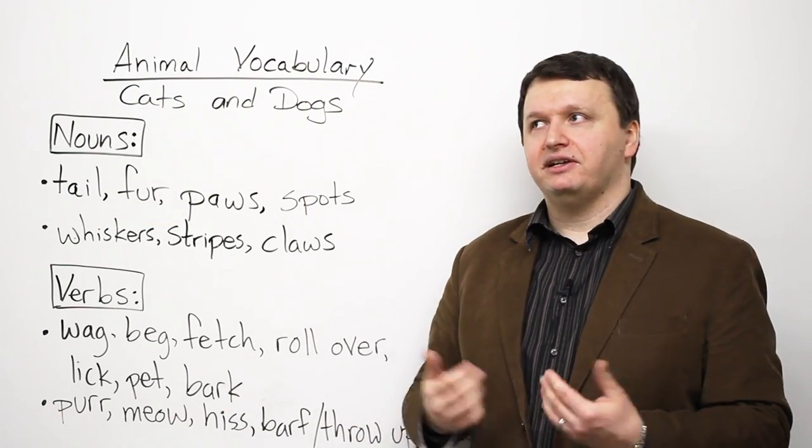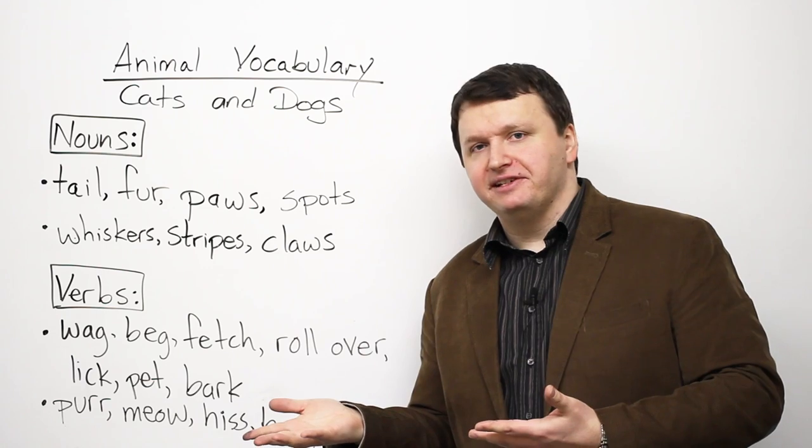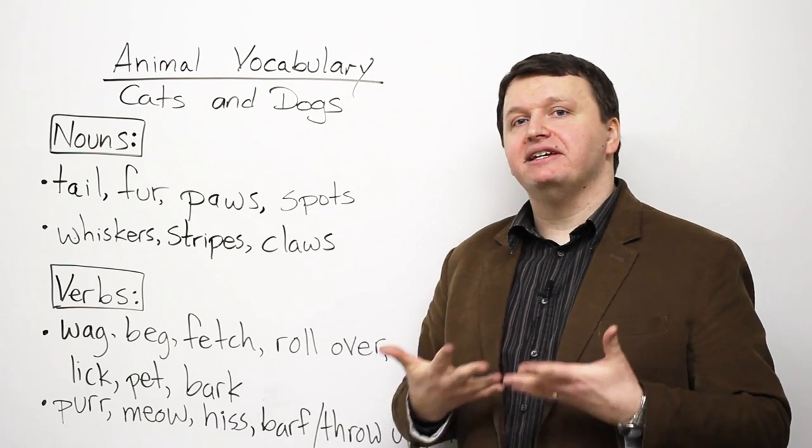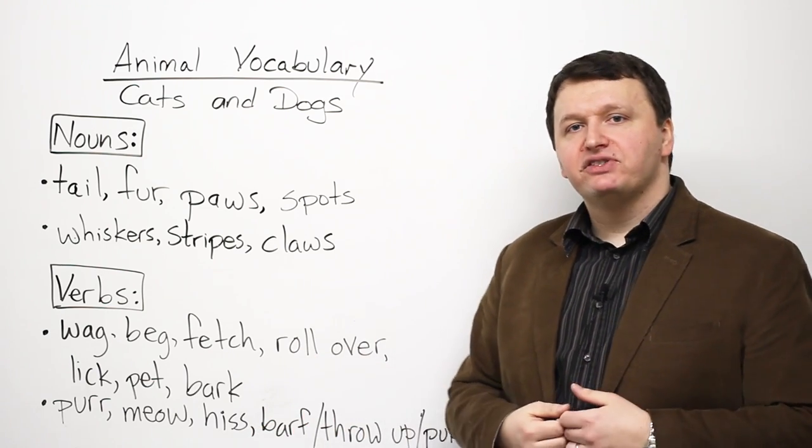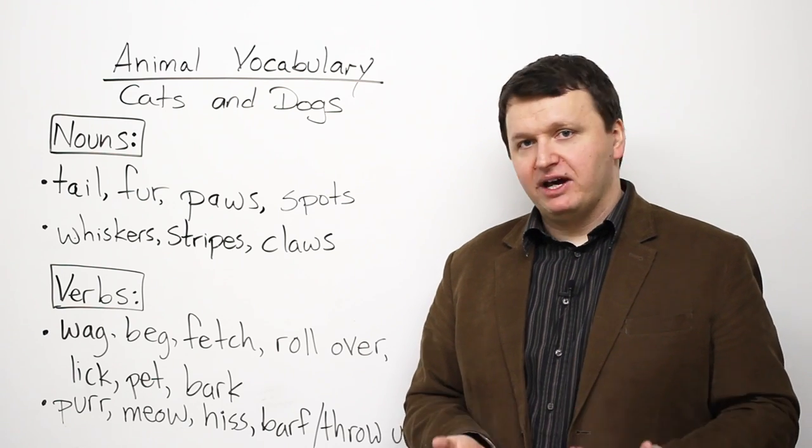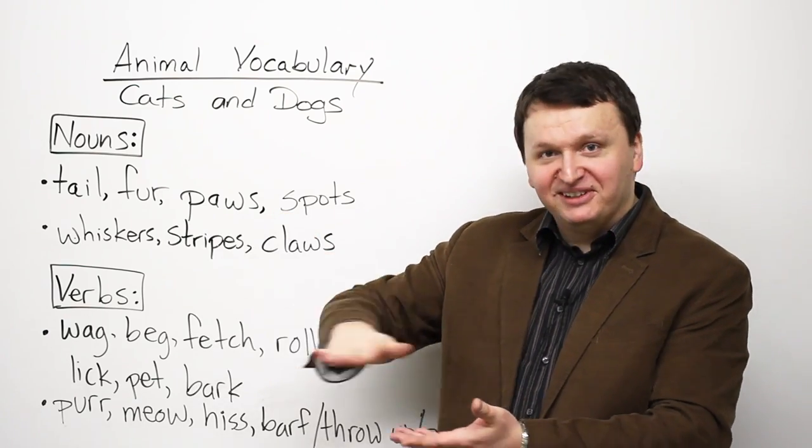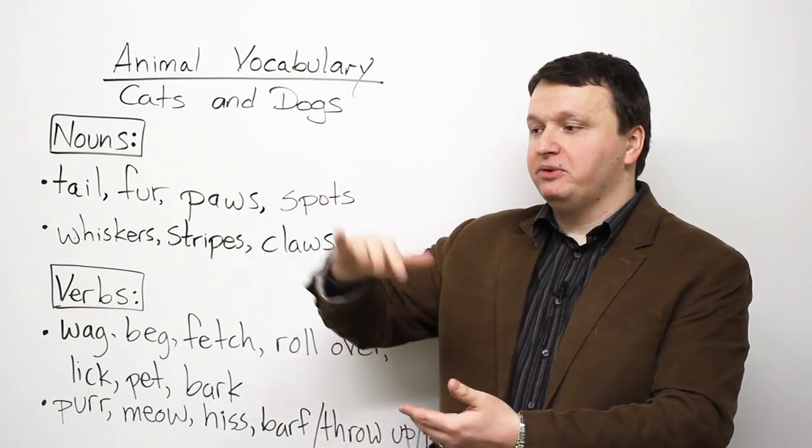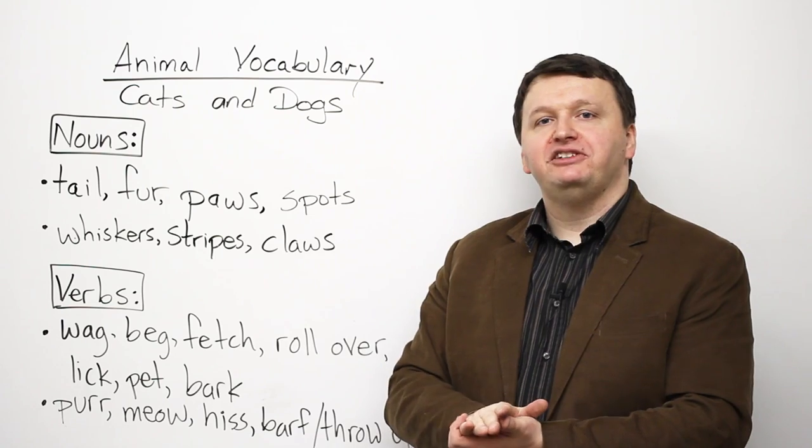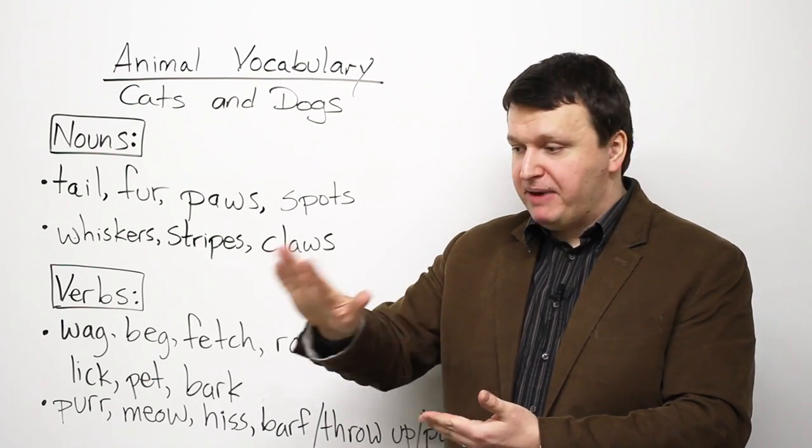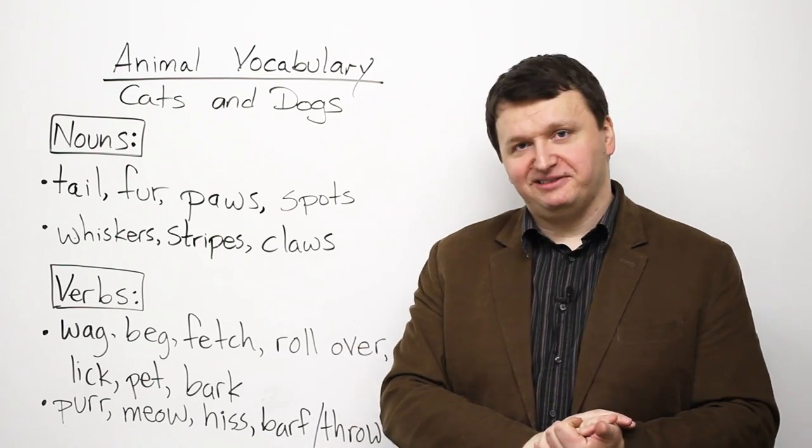Pet. You're thinking a dog is a pet. A cat is a pet. Pet is also a verb. So if you have a dog, if you have a cat, if you have any kind of pet where you can stroke their fur, you can pet them. So you can pet your dog, you can pet your cat.